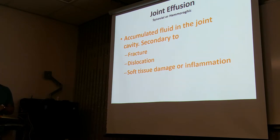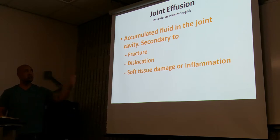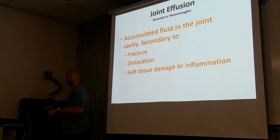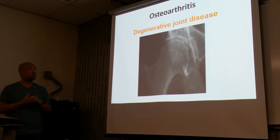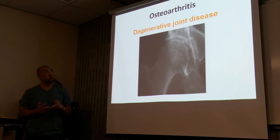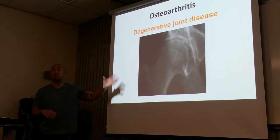Joint effusion — either synovial or hemorrhagic — is accumulated fluid in the joint cavity secondary to fractures, dislocation, and soft tissue damage or inflammation. Osteoarthritis is degenerative joint disease. With someone who has osteoarthritis, you will see some degenerative changes in the bone and joint areas.